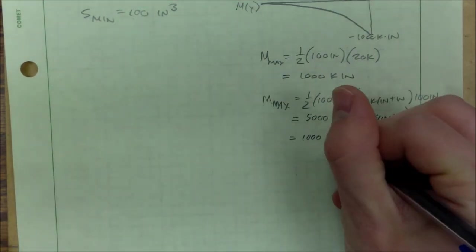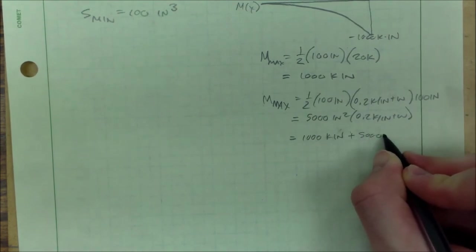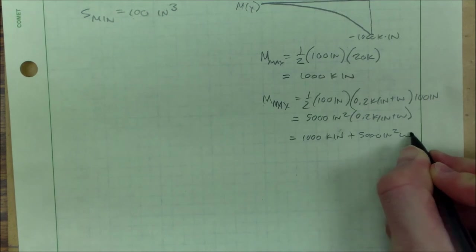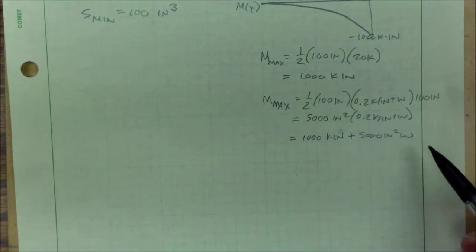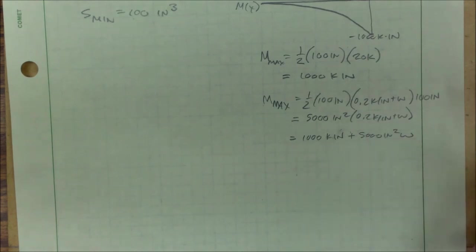So this is going to be our maximum moment. Let's simplify that a little bit. So 1.5 times 100 times 100 will be 5,000.